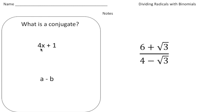So the conjugate of 4x plus 1 would just be 4x minus 1. And the conjugate of a minus b would be a plus b. So again, all the conjugate is, is when you have a binomial, all you're doing is changing the sign from a positive to a negative, or from a negative to a positive. The reason why you need to know this is in order to rationalize this denominator, we need to multiply both sides by the conjugate.